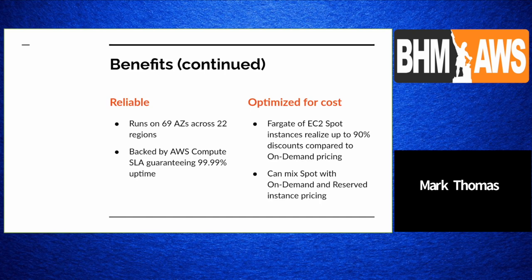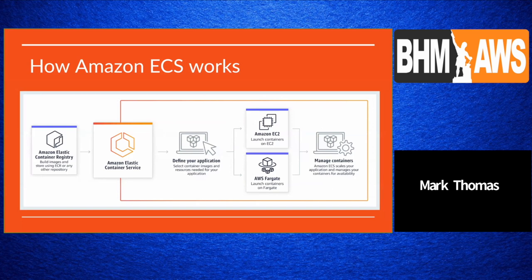How does ECS work? You have the Elastic Container Registry, which is essentially a Docker registry like hub.docker.com — a private registry for your account. ECS pulls images from that registry. Within that, you define your application using task definitions along with your service definition. You then choose whether to launch on EC2 servers or go serverless with Fargate, and ECS will scale your application and manage your containers for availability.